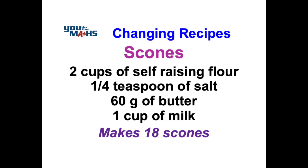When we use a recipe to make something, we do so for a certain number of people or a certain number of items. In this case, when we're making scones, this recipe is making 18 scones. But what if we wanted to change the recipe so we're making it for more people, or we wanted to make more scones?